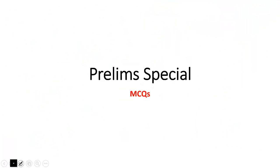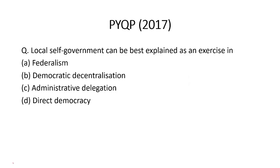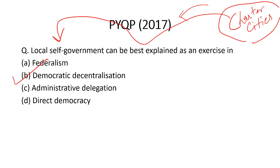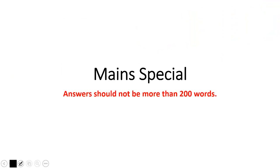Now let's look at a prelims-based question from the 2017 previous year question paper: 'Local self-government can be best explained as an exercise in democratic decentralization.' This question was selected because we are discussing charter cities and how they fit into local self-government. Let's also look at a mains-based question from today's Hindustan Times.